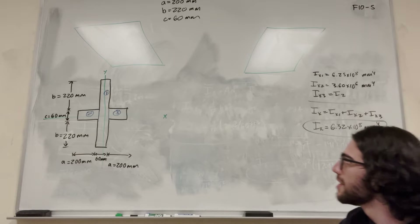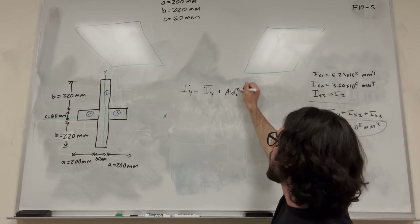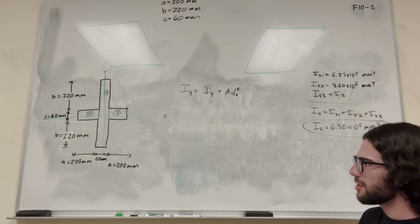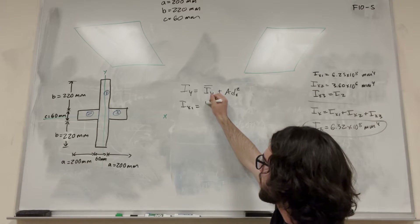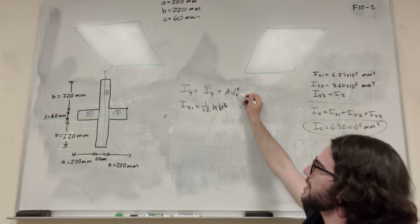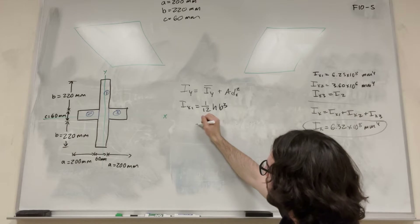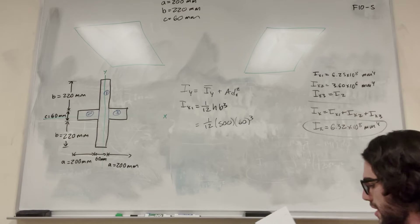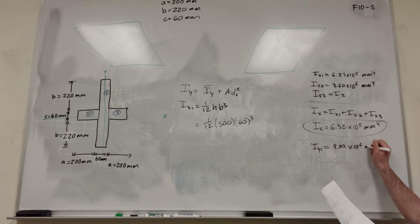Now we're going to find the moment of inertia around the y-axis. i of y is equal to i-bar of y plus area times distance in x squared — where distance in x is the distance from the centroid to the y-axis. For rectangle 1, the formula is 1/12 times height times base cubed, and since it's centered on the y-axis the distance in x is 0. Plugging in: 1/12 times 500 times 60 cubed. i y of 1 equals 9 times 10 to the 6th millimeters to the fourth.